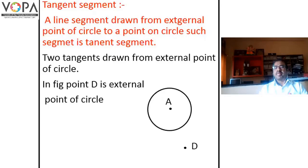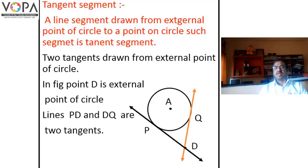Line PD is a tangent. Line QD is a second tangent. Line PD and line DQ are two tangents of the circle.